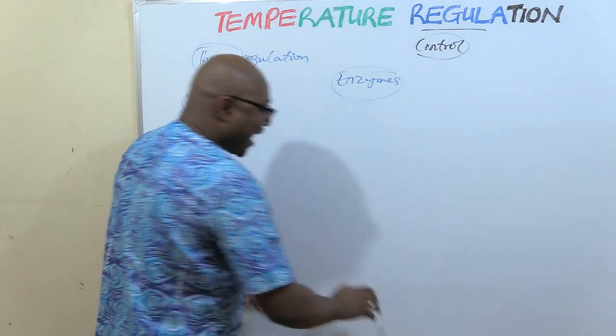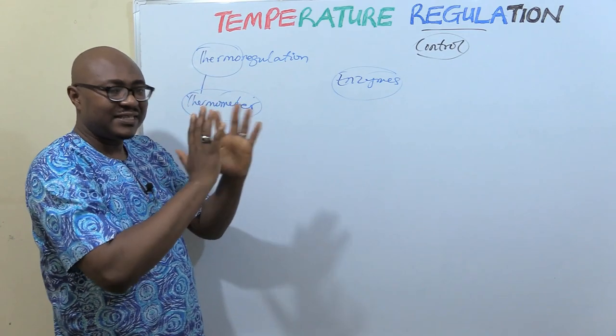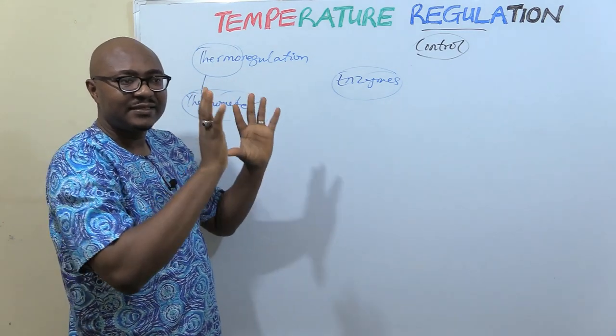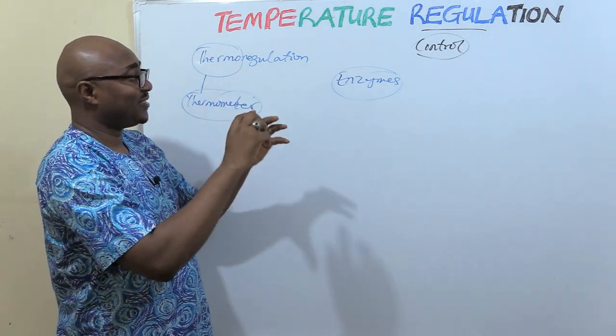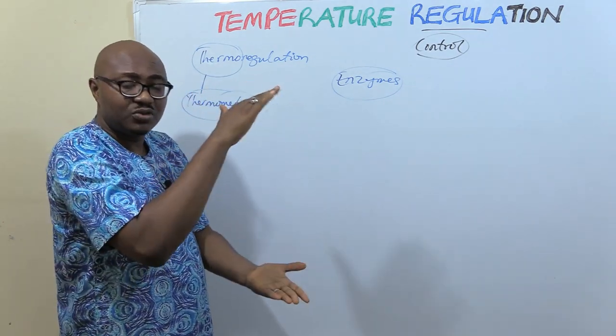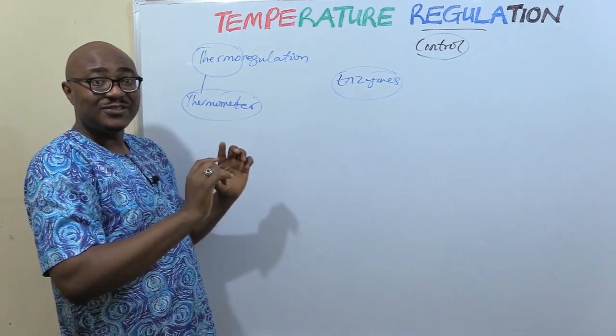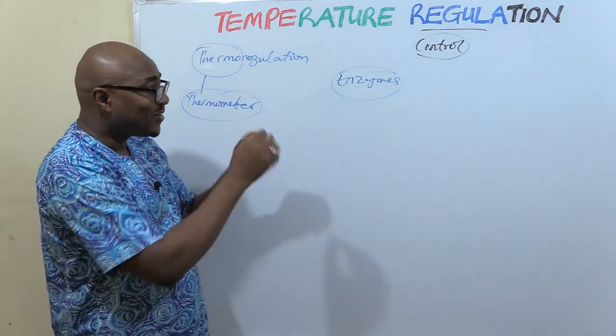That's why the body has a very dedicated control system to regulate temperature — so it doesn't go too low and it doesn't go too high. We're going to be looking at how it does that.